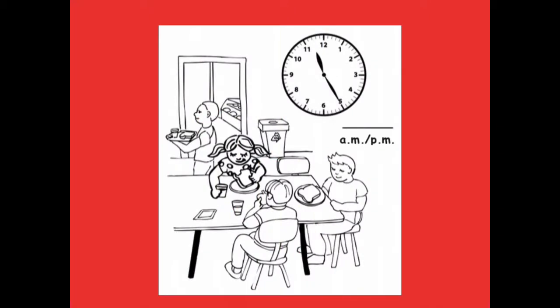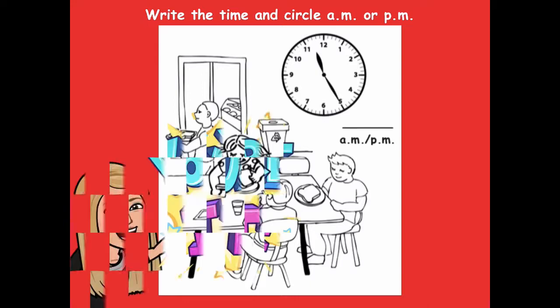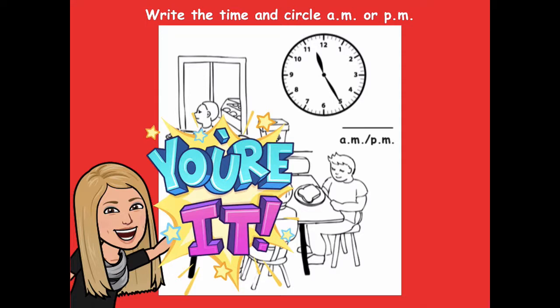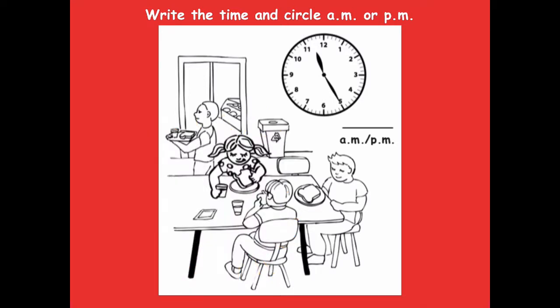What's happening in this picture? It looks like they're having lunch. Let's think about lunchtime — this one might be a little tricky for AM or PM because sometimes you have lunch close to the middle of the day. Pause the video, write the time, and circle AM or PM. The hour hand is between the 11 and 12, so we're in the 11 o'clock hour. Count by 5s to the 5: 5, 10, 15, 20, 25. The time is 11:25, and it's AM.